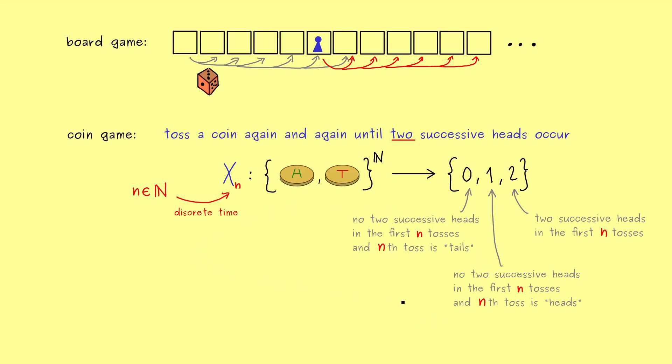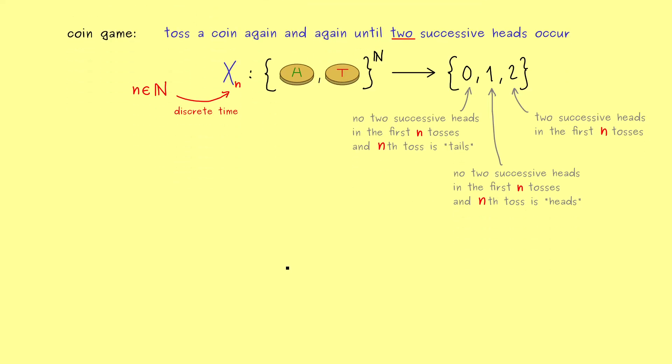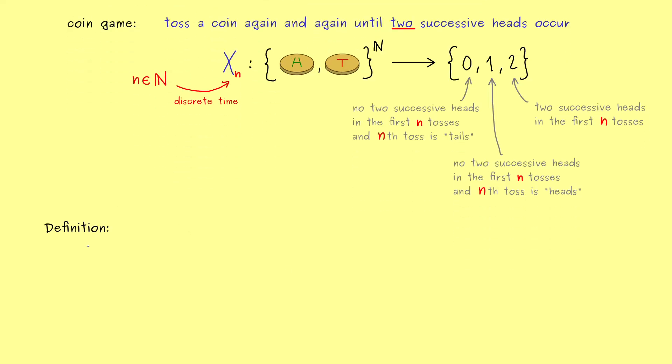But before we go into more details for this example I first want to give you the definition of a stochastic process. Now the idea you already know from the example but now I want to give you the formal definition. So let's write down how we put random variables in a row.